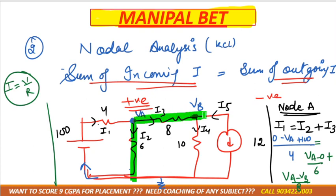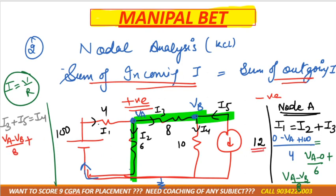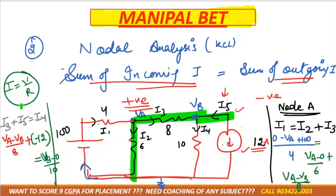Applying KCL at node VB: incoming currents I3 and I5 equal outgoing current I4. I3 is (VA minus VB) divided by 8. For current source I5, check direction — the I5 direction and the 12 ampere direction are opposite, so I5 equals minus 12. If directions were the same, it would be positive. I4 is moving from VB to 0, so it is (VB minus 0) divided by 10.